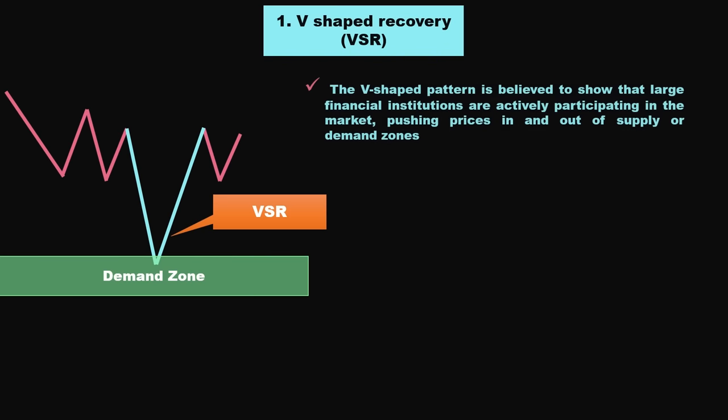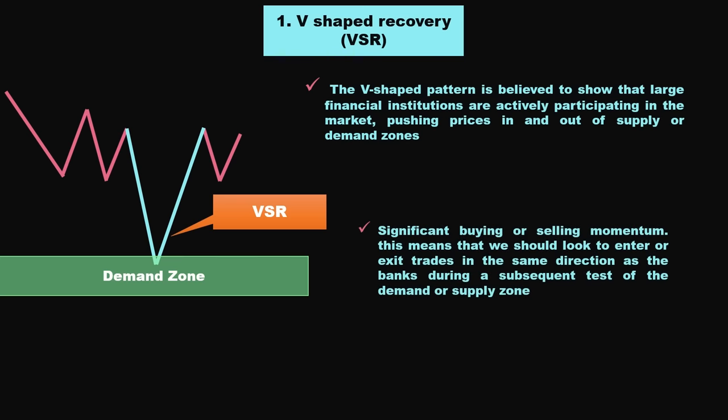The V-shaped pattern is believed to show that large financial institutions, often referred to as banks, are actively participating in the market, pushing prices in and out of supply or demand zones. The reason we want to see the V-shaped pattern is that it indicates that the banks are actively participating in the market, which can lead to significant buying or selling momentum. This means that we should look to enter or exit trades in the same direction as the banks during a subsequent test of the demand or supply zone.